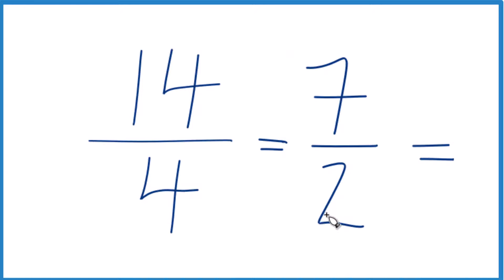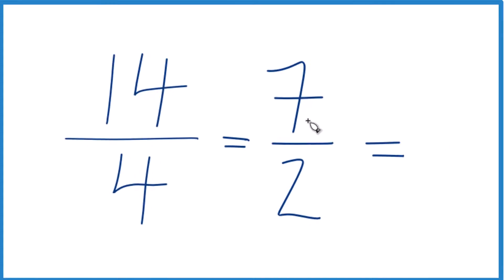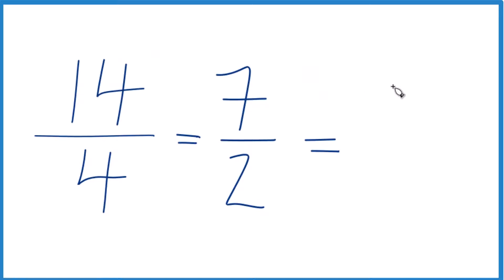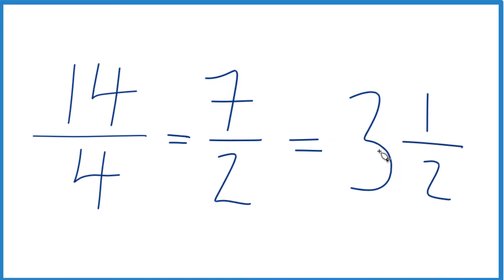The way you do that: 2 goes into 7 three times. 3 times 2 gives us 6 with 1 left over, and we bring the 2 across. So 3 times 2 is 6, and we have 7, so we have a remainder of 1, and we brought the 2 across.